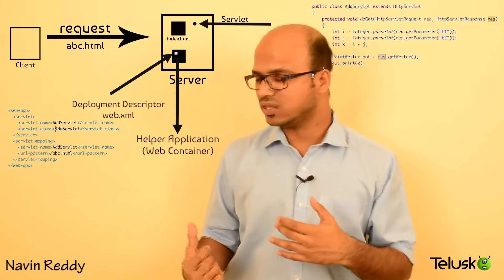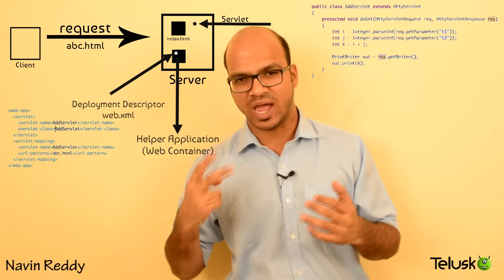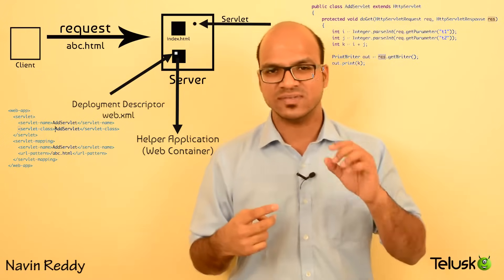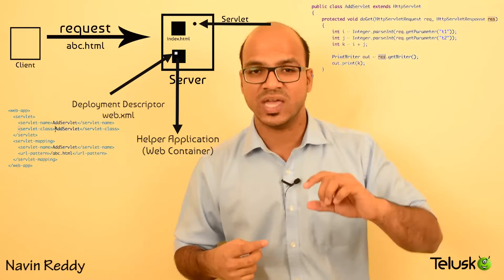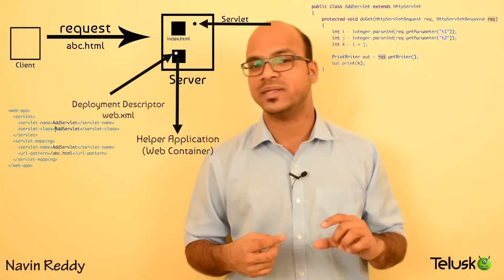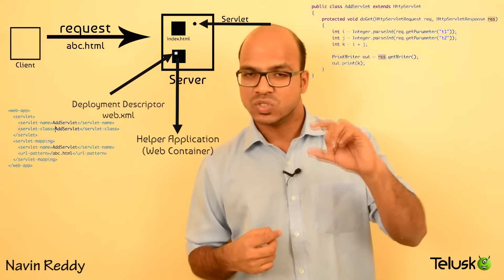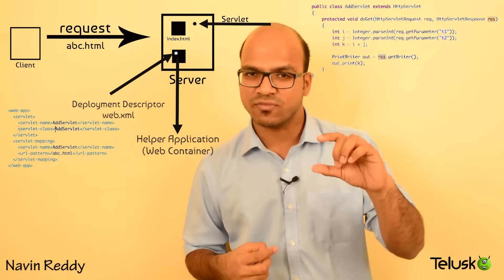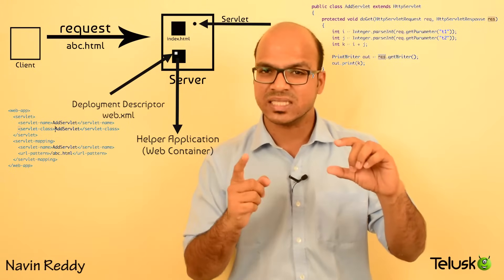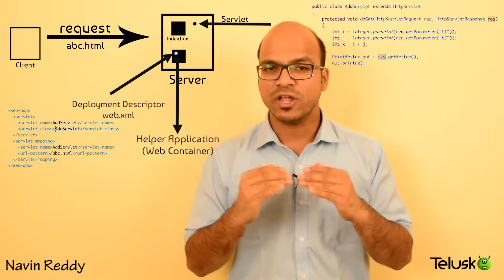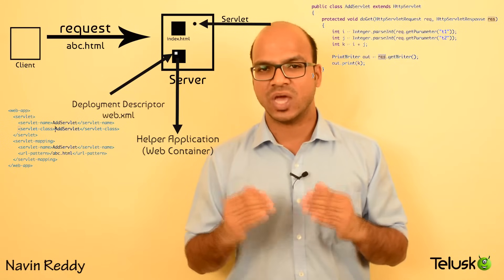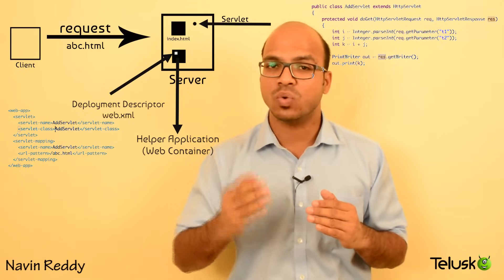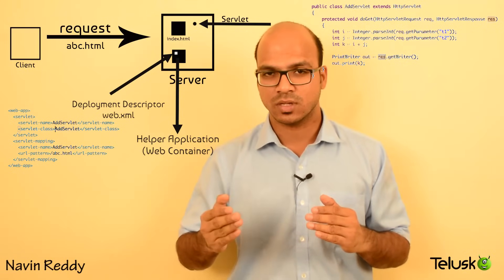When a client sends a request, it goes to the server, then to the web container. The web container checks the web.xml file to find which servlet handles that request. In the web.xml file we have two tags: the servlet tag, where you mention the class name, and the servlet-mapping tag, where you mention the URL pattern.